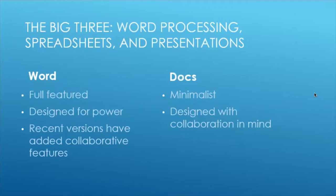We're going to cover the big three: word processing, spreadsheets, and presentations — Word, PowerPoint, and Excel — the file types businesses need the most access to. When it comes to word processing, we have Microsoft Word and Google Docs. Word is very full-featured and is designed to be the premier word processing software on the market. It has been around absolutely forever and recent versions have added in a lot of the collaborative features that would have previously given G Suite an advantage. The Microsoft Suite does them as well, and in some ways even better, because there's no loss of data integrity when everything is native to the Microsoft product.